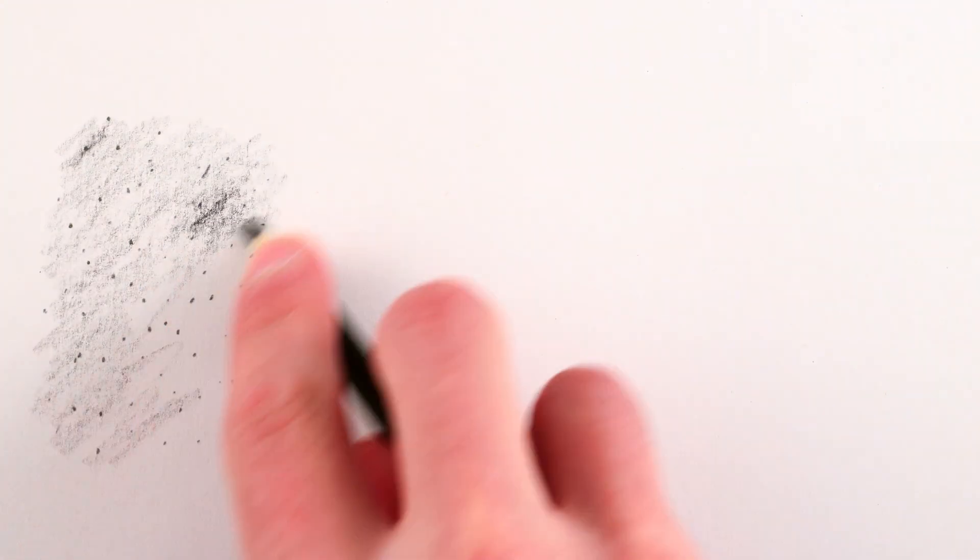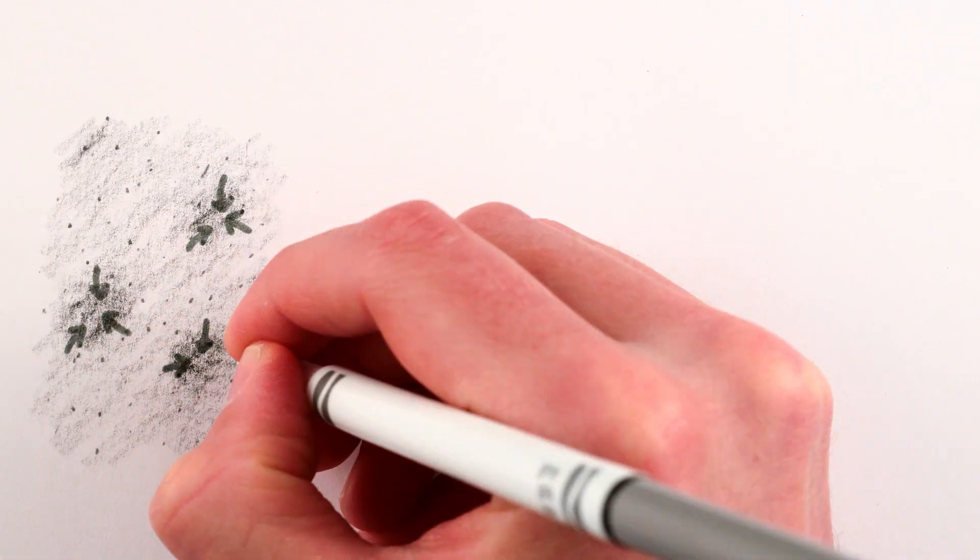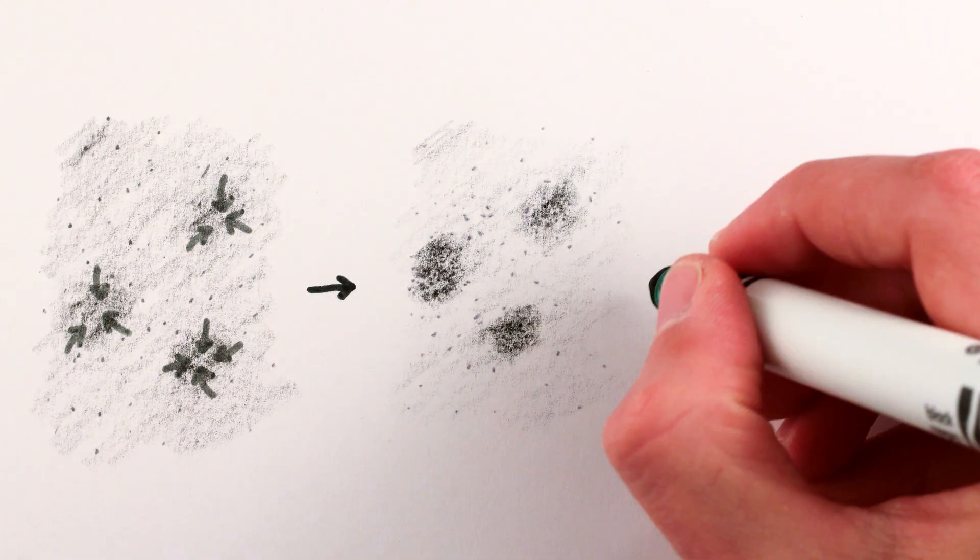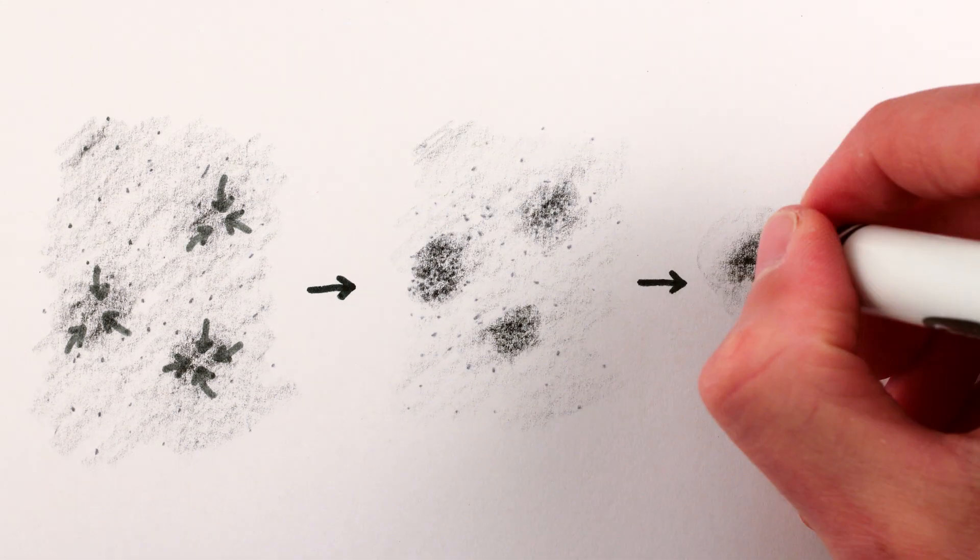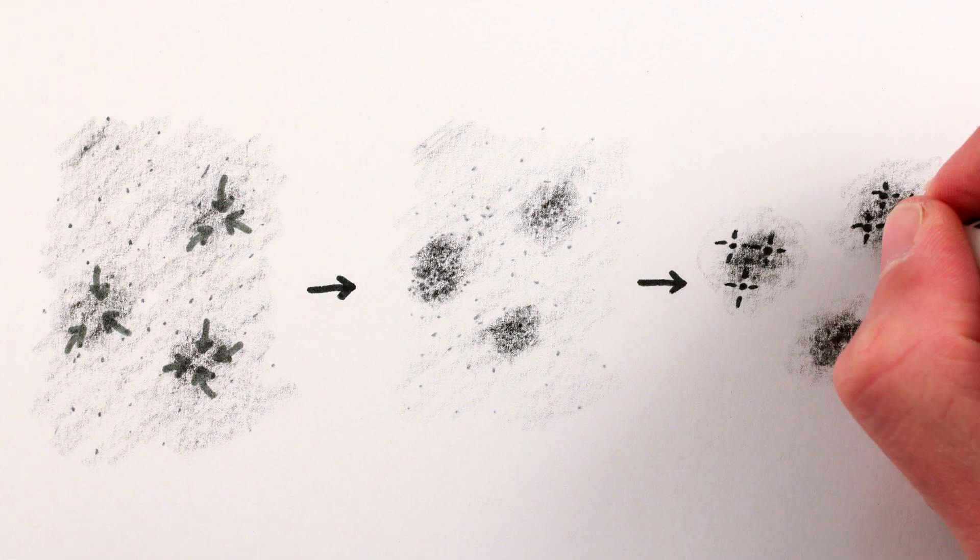Gravity would have caused slightly denser areas of dark matter to attract into clumps, pulling in bits of gas until they were dense enough on their own to gravitationally collapse and start thermonuclear fusion. A star. Many stars.